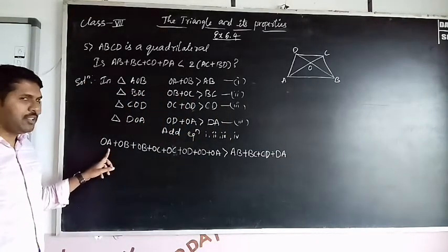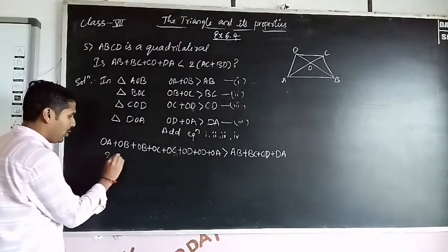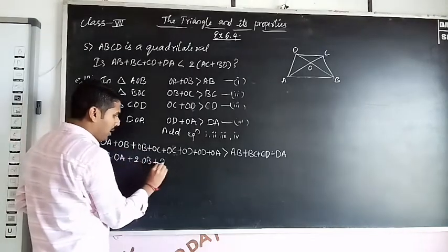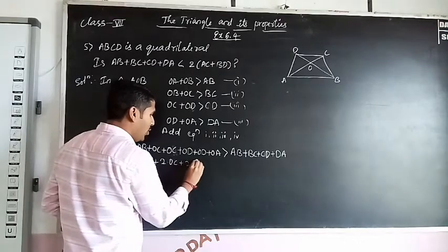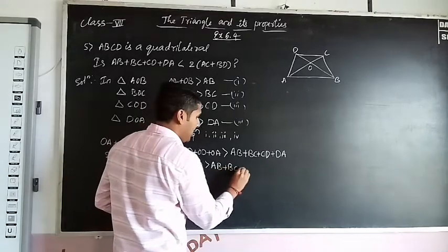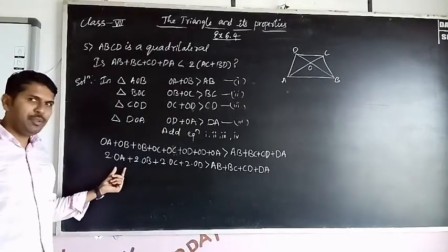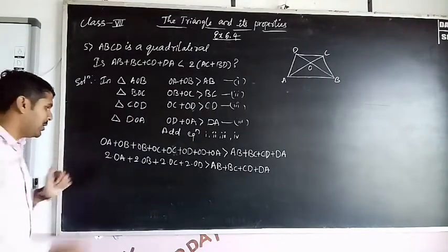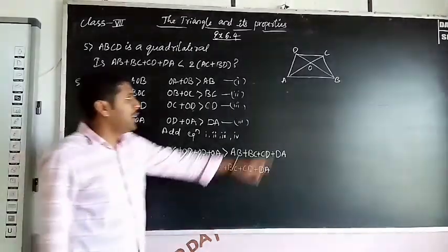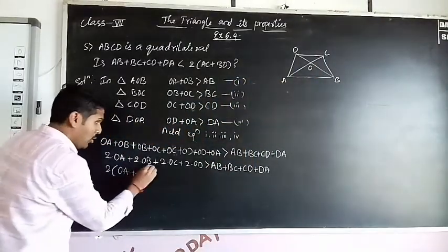So here OA is there, so OA two types. Two is common, take it outside. So take OA + OC together. This is first one.